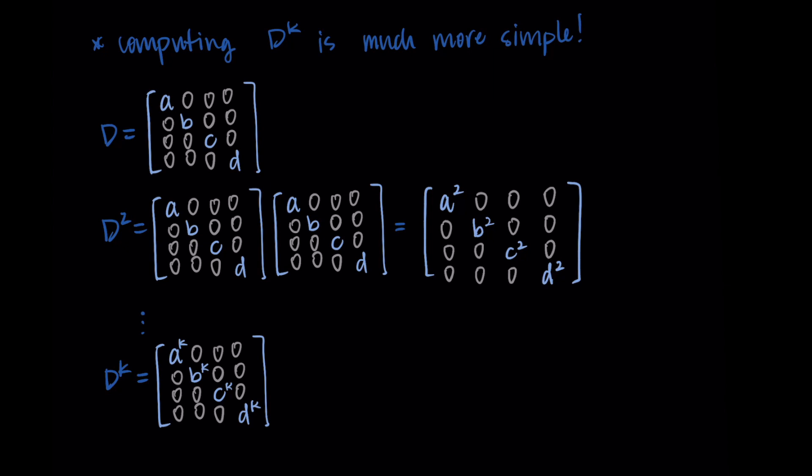Doing this computation where we just have individual elements that we're raising to a power is so much easier than taking a whole matrix and multiplying it by itself k times, where we'd have many multiplications and additions going on in that operation. This is very simple. All we do is take these elements on the diagonal and raise them to a power.